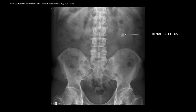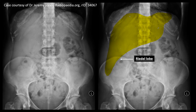Sometimes we can see such calcified structures in the abdominal X-ray. In some conditions, the lower margin of the liver extends downward. Although this may be normal, this extended lower margin of the liver is known as Riedel's lobe.